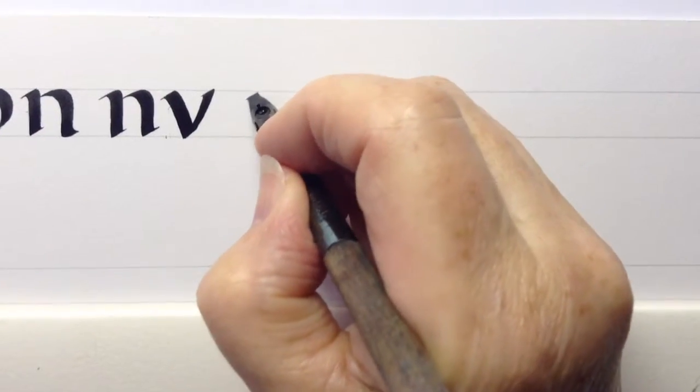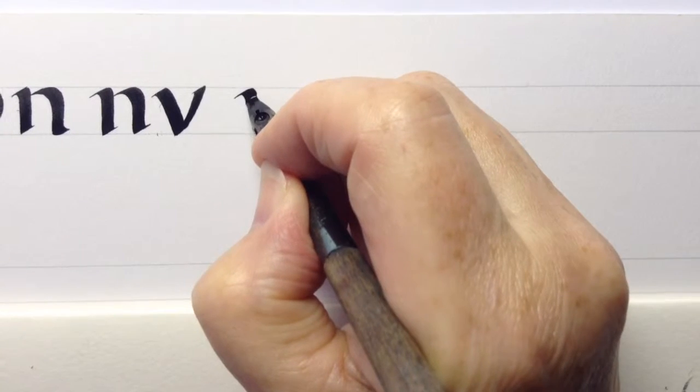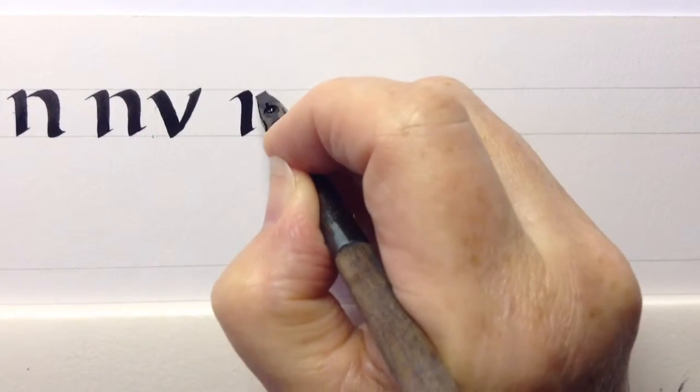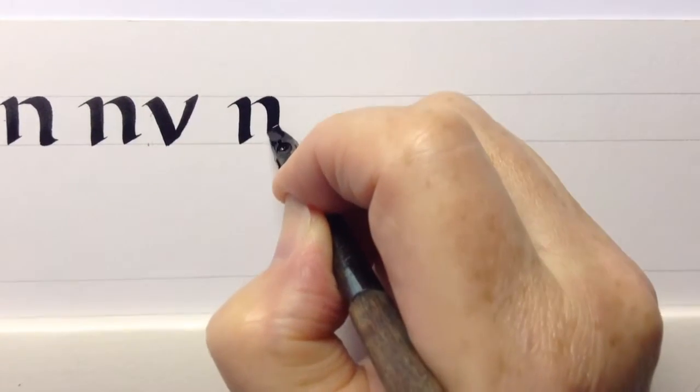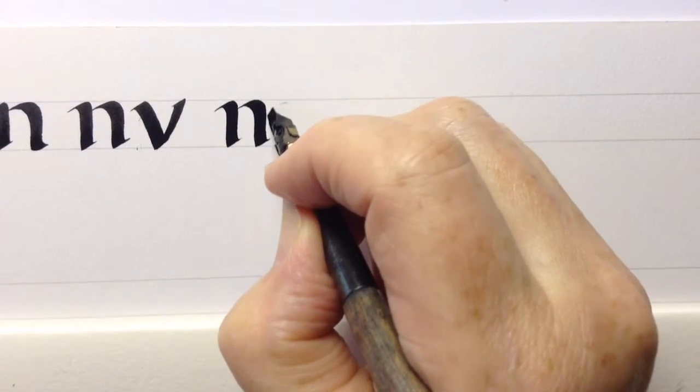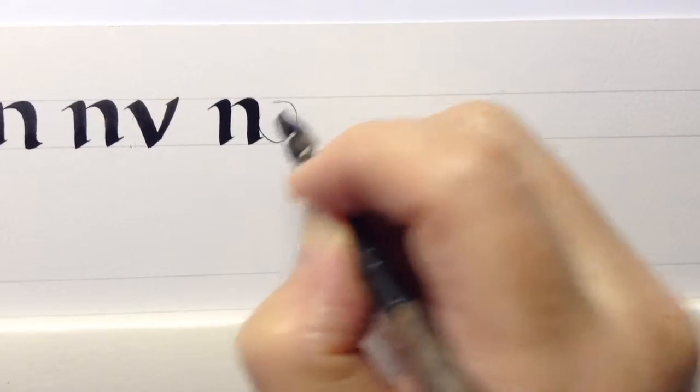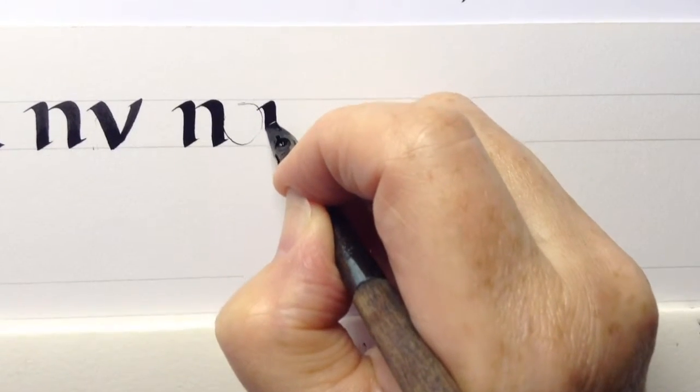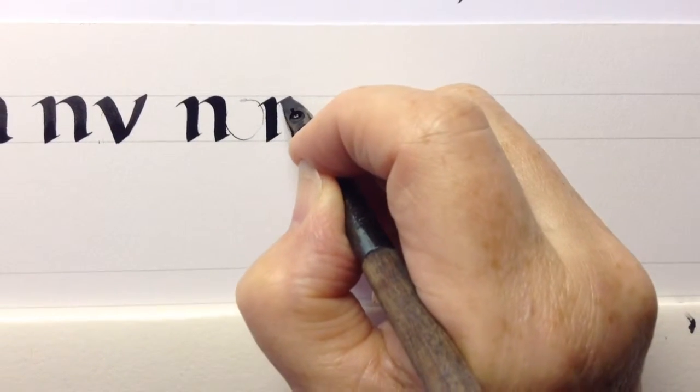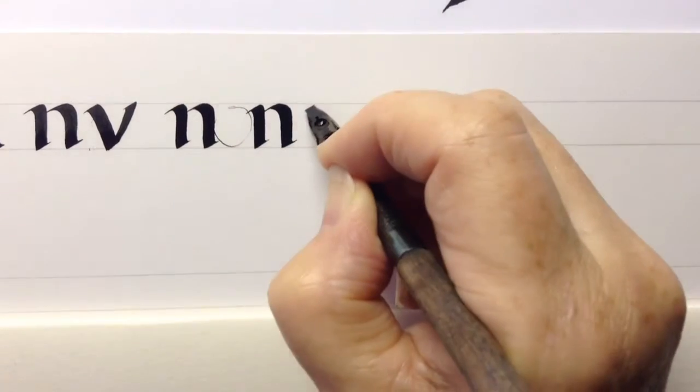When it comes to the spacing between words, you should leave the space of a letter O. So if I just do that with the corner of the nib of that alphabet between the words.